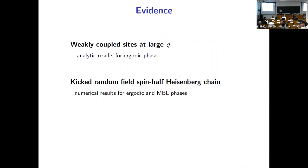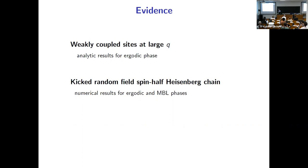That's what we should expect in principle. What's the evidence that it actually happens? We have two bits of evidence; I'll tell you about one. In the ergodic phase, there's a way of constructing quantum circuits that's exactly solvable in the limit of large local Hilbert space dimension, and you can verify that gives exactly the behavior I've described from the transfer matrix. But you can also go to a more generic problem that doesn't use this large-Q limit, which importantly gives you access to both phases, and then you can do numerics.